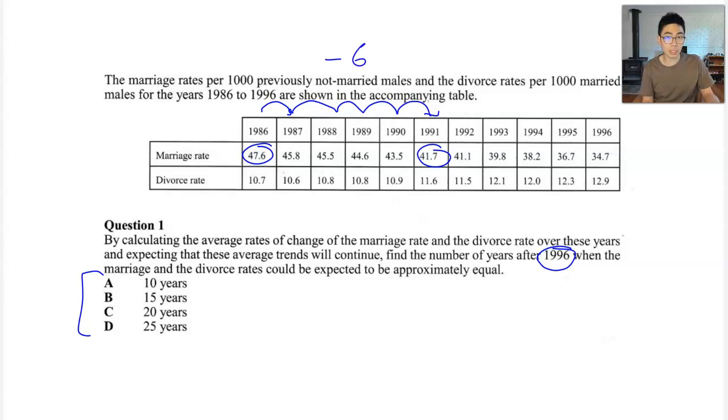Let's see if it does a similar thing in the next five years, because that's what we would expect if it followed a linear trend. So if we were to go from 1991 now to 1996, so that's one, two, three, four, five years. It goes from 41.7 to 34.7. And it's not exactly six, but I think it's about seven. So it's gone down by about seven, which is not too bad. That's quite reasonable.